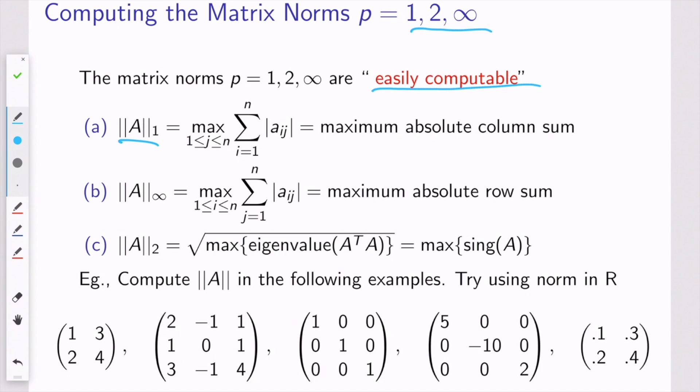So it turns out that the 1 norm of a matrix, rather than solving as an optimization problem, you can compute it directly by taking the maximum absolute column sum. So that means you look at all of the column sums of absolute values, and you choose the one that's largest. For example, here in this matrix, I'd have in the first column absolute 2 plus absolute 1 plus absolute 3, that's 6.